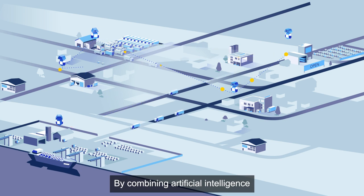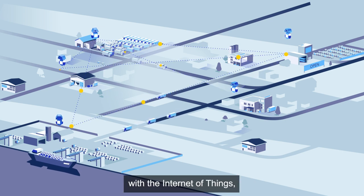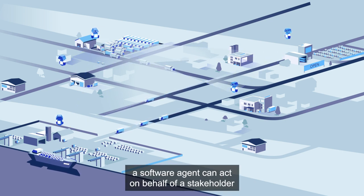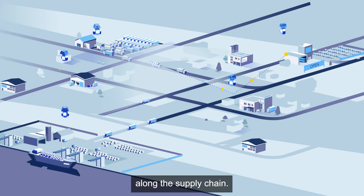By combining artificial intelligence with the Internet of Things, a software agent can act on behalf of a stakeholder along the supply chain.